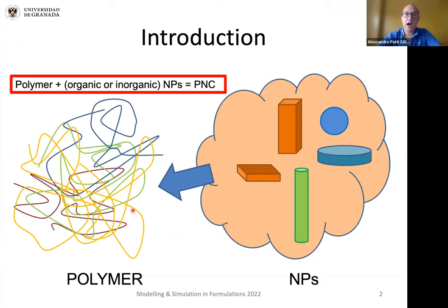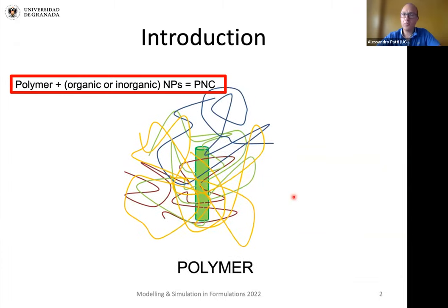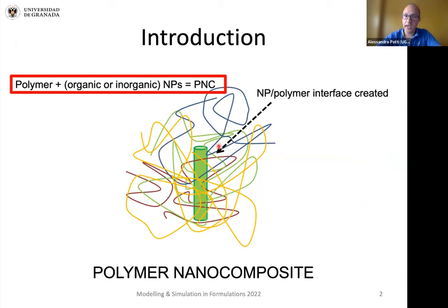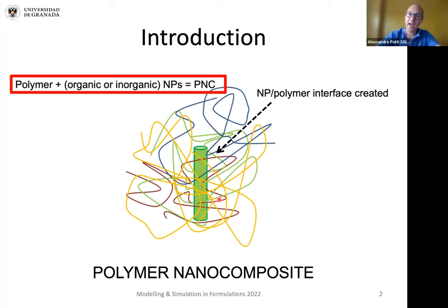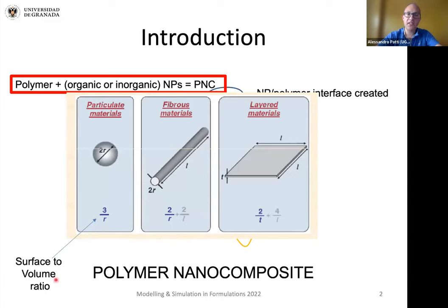Polymer nanocomposites are hybrid materials consisting of a polymer incorporating nanoparticles, and these nanoparticles can be spherical or can be anisotropic. When we incorporate nanoparticles in the polymer matrix, we create a contact area, an interface between the polymer chains and nanoparticles. This interface is very important because it is the location where the interactions between polymers and nanoparticles establish, and these interactions are crucial to determine the final macroscopic behavior of the material. The aim is to maximize this contact area by maximizing the surface-to-volume ratio of the nanoparticle, which goes with the inverse of the characteristic length of nanoparticles.